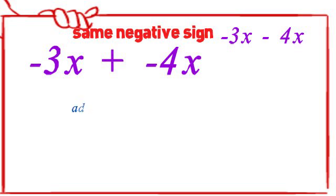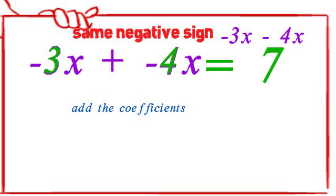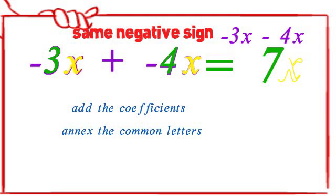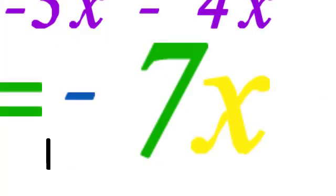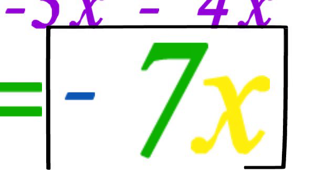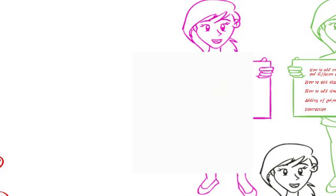First, you add the coefficients. These are 3 and 4 to get 7. The next thing is to annex the common letters. The common letter here is x. Finally, you prefix the common sign. The common sign is negative. So our final answer will be negative. The answer is negative 7x.